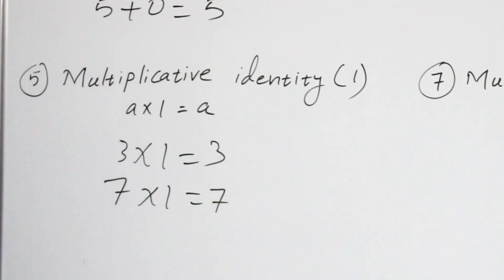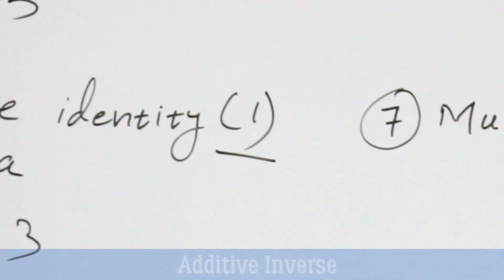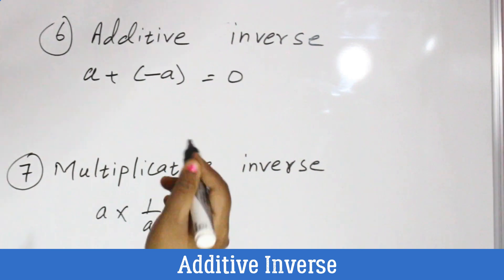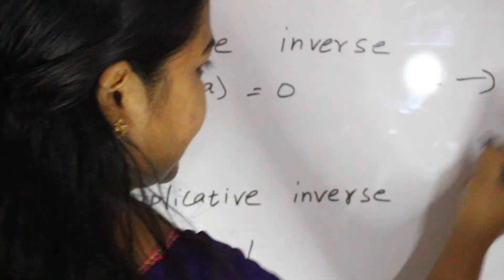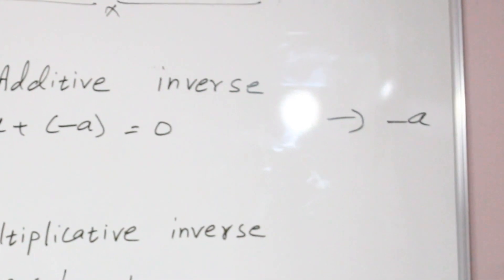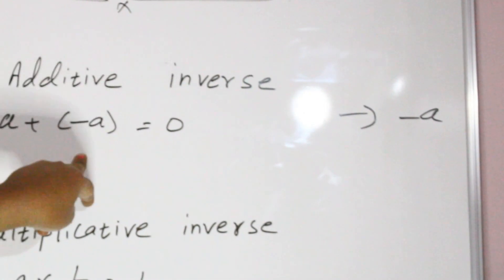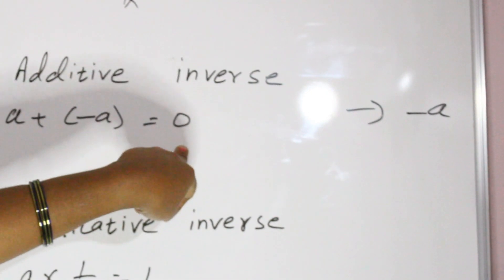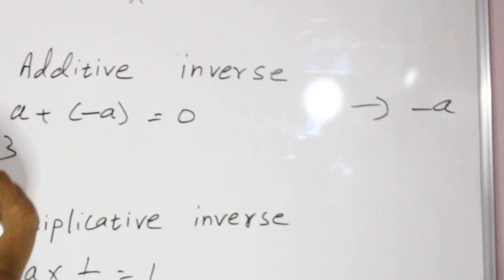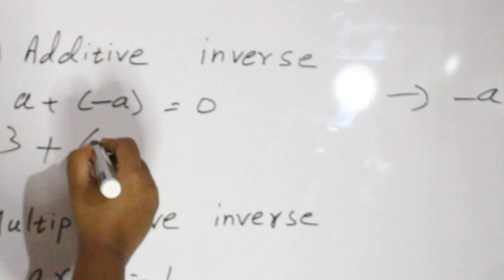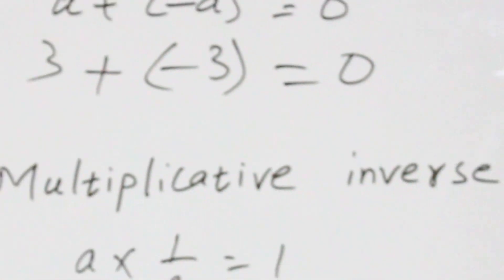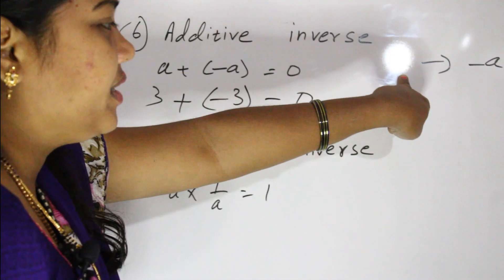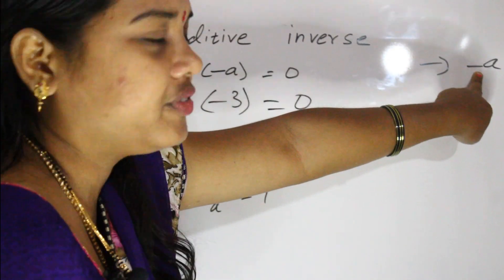Next is additive inverse. Suppose a number is A — then its additive inverse is minus A. Whenever we add a number with its additive inverse, we always get zero. For example, three plus its additive inverse minus three equals zero. So the additive inverse of a number is the negative of that number.